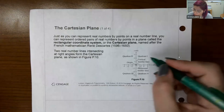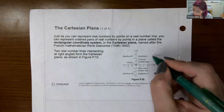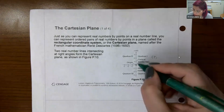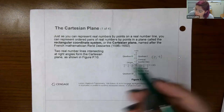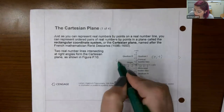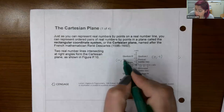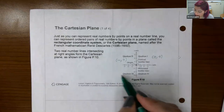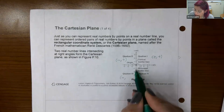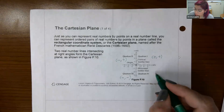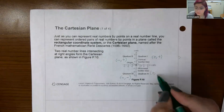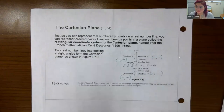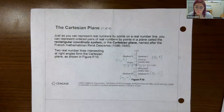In quadrant one, the x values are positive and the y values are positive. In quadrant two, the x values are negative and the y values are positive. In quadrant three, the x values are negative and the y values are also negative. And finally, in quadrant four, the x values are positive but the y values are negative. So depending on what the signs of each number are, it really does tell you what region or what quadrant the point will lie in.